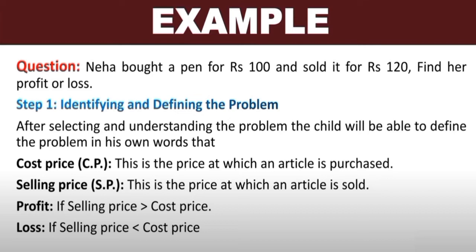We first look at the meaning of buying, selling, profit, and loss. Cost price is the price at which an article is purchased. Selling price is the price at which an article is sold. Profit occurs when the selling price is greater than the cost price, and loss occurs when the selling price is less than the cost price.